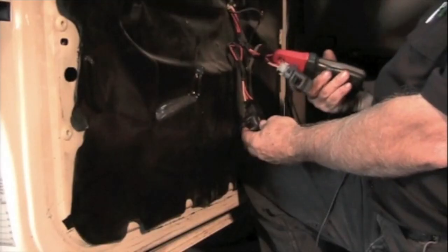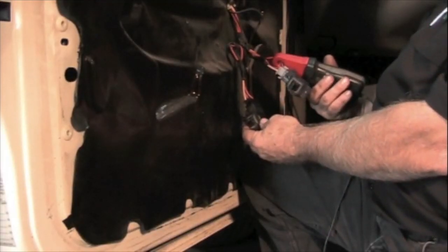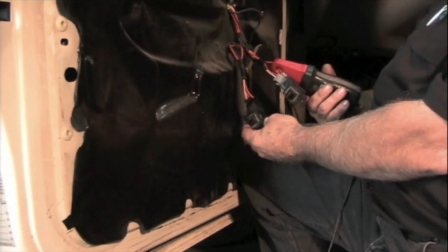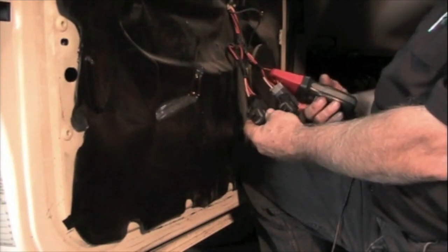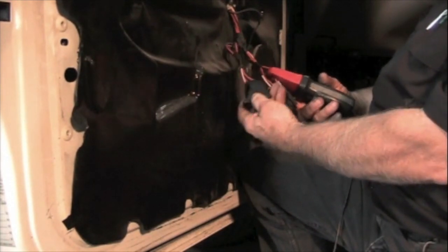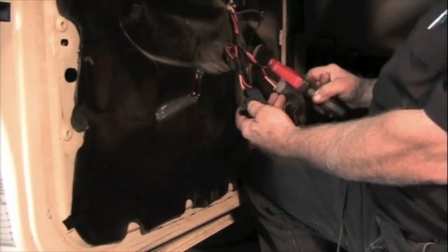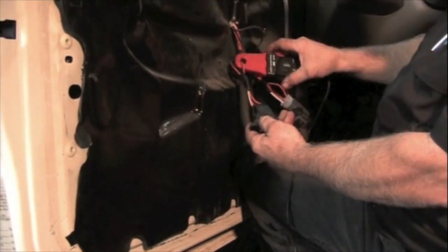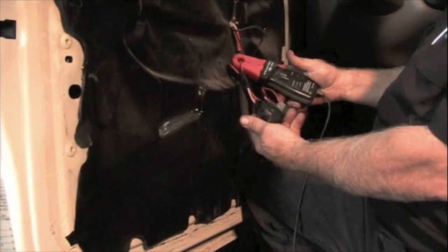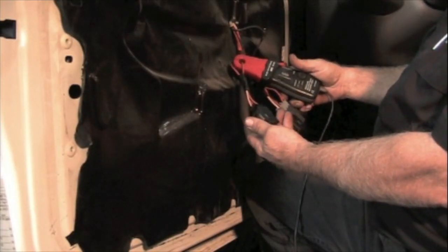Now this is the driver motor with the complaint. The passenger side motor has no complaint. That window seems to be working fine. So why can't we just go to the passenger side, move our current clamp over here? Now we can look at this motor and compare the waveforms.